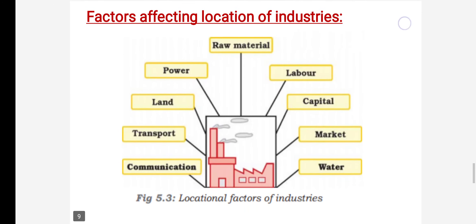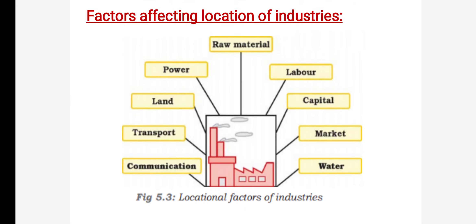Now let's look at the factors affecting the location of industries. To locate an industry you need: availability of raw materials, land — a suitable place to produce goods — water for processing, labor for working, power for running the industry, capital for investment, transport, and market. These are the factors helpful for locating industries.